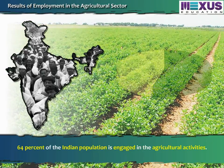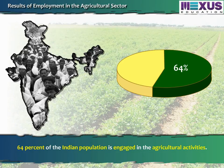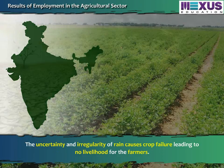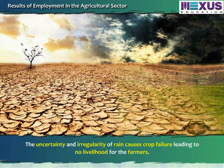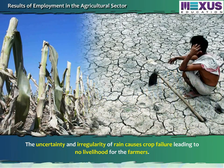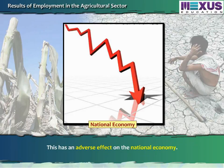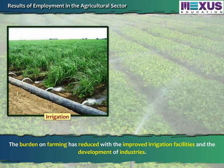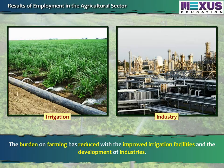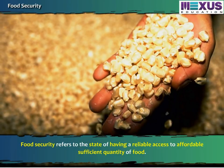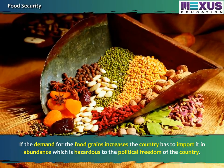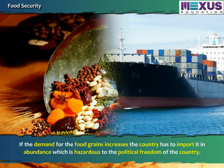India is an agrarian country where 64% of the Indian population is engaged in agricultural activities. Agriculture in India largely depends on rains, and the uncertainty and irregularity of rain causes crop failure, leading to no livelihood for farmers, which has an adverse effect on the national economy. The burden on farming has reduced with improved irrigation facilities and the development of industries. Food security refers to the state of having reliable access to affordable and sufficient quantity of food. If the demand for food grains increases, the country has to import it in abundance, which is hazardous to the political freedom of the country.